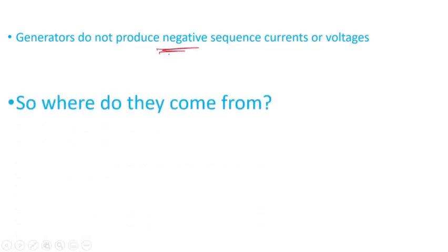So where do they come from? One source of negative sequence is open phase. For instance, you have a three phase system. Let's assume this is impedance, phase A, phase B, phase C.